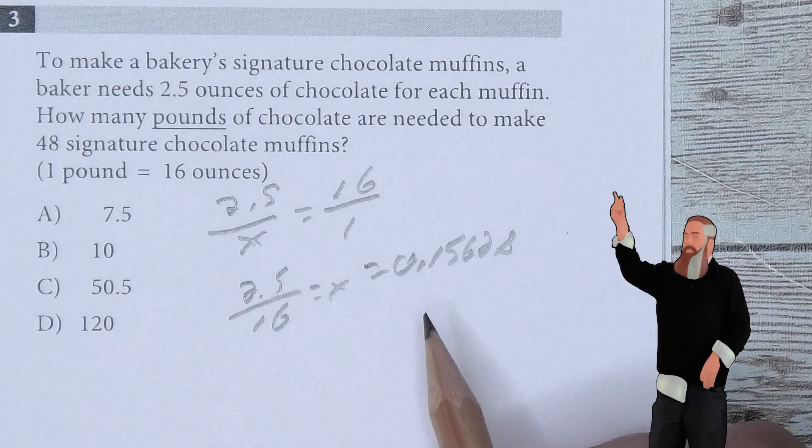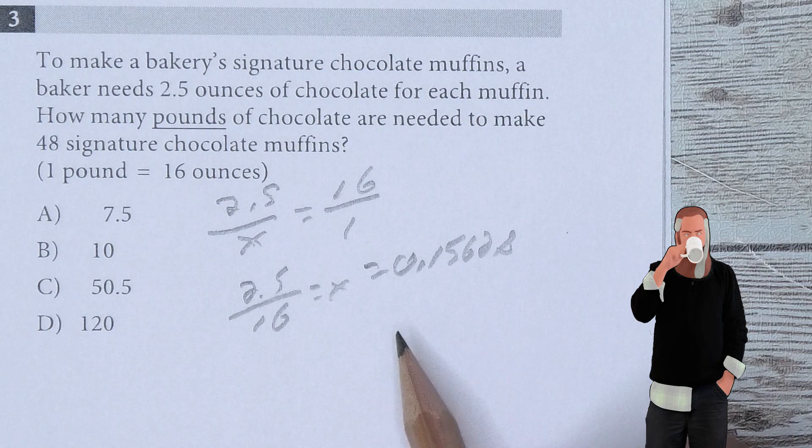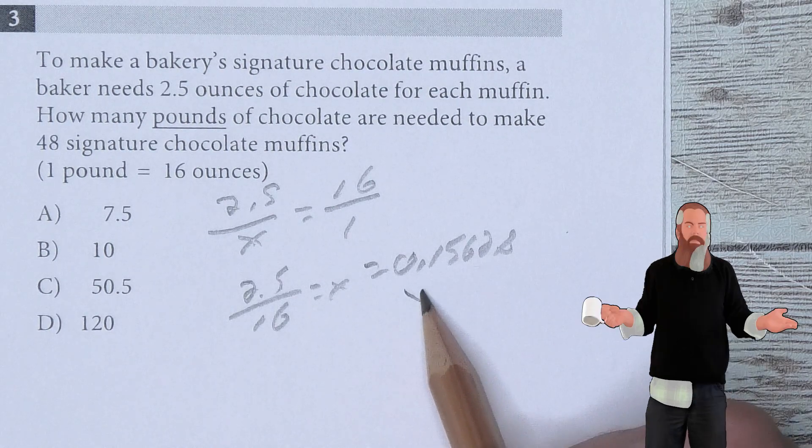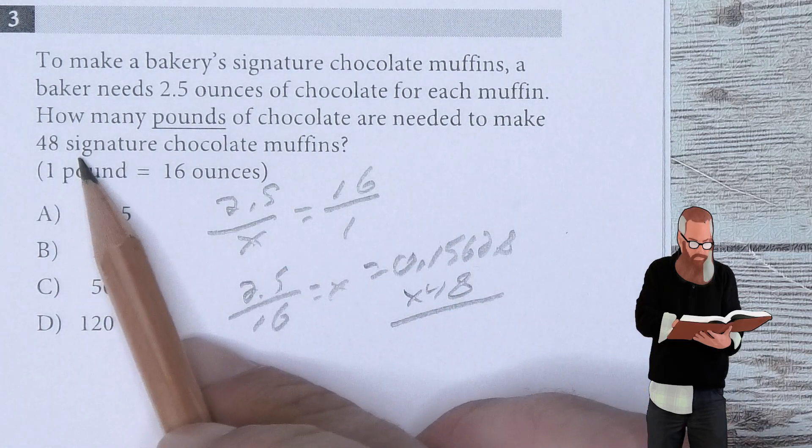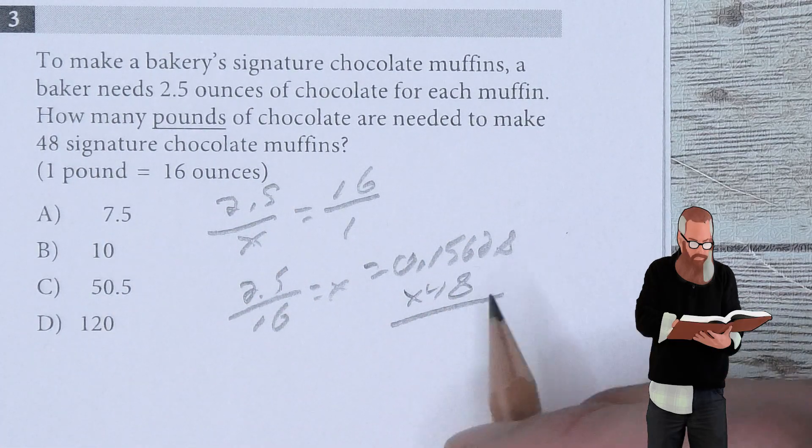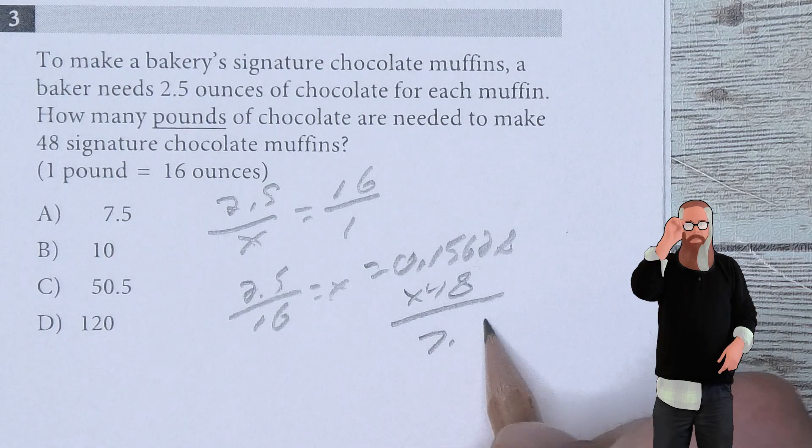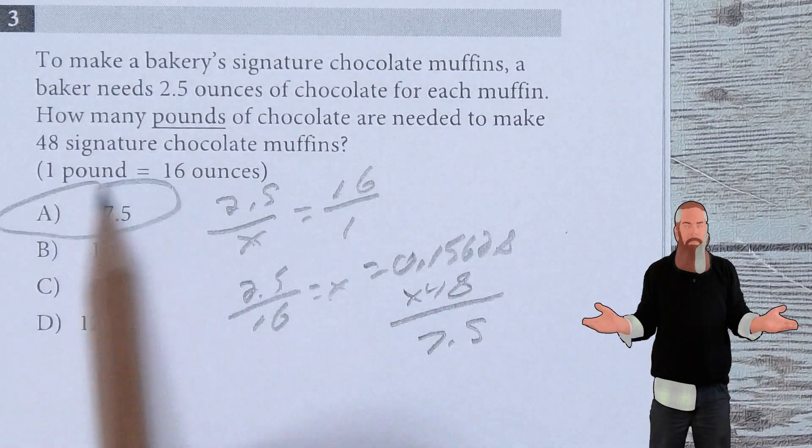Now we have this number, but we have to multiply it by 48 because we need to figure out the number of muffins. We've already got the pounds. This gives us 7.5, so A is the answer.